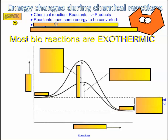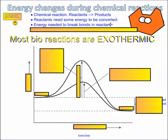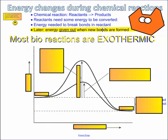Reactants need some energy in order to be converted. So although the reaction is exothermic where we end up with a net release, in the beginning there still needs to be some energy that's actually input. That's called the activation energy — the energy required to break bonds in a reactant or to join them together. Later, energy is given out when these new bonds are actually formed.